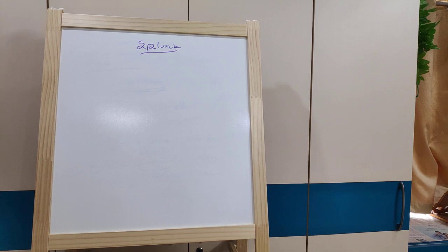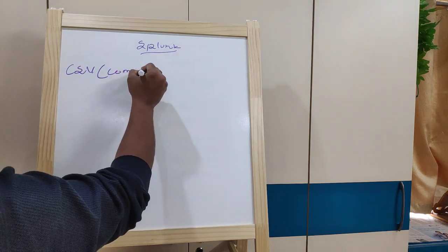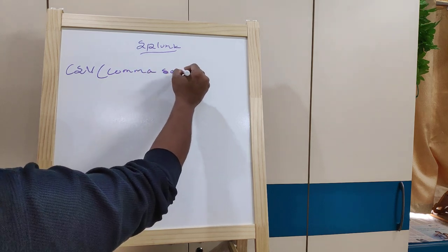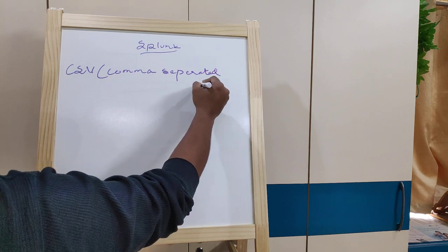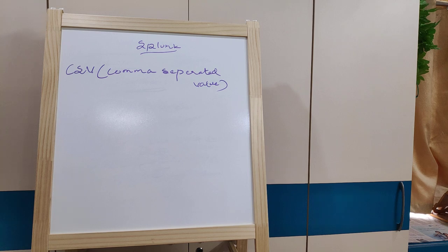Most raw data you will encounter is CSV log files. Each entry has some sort of format. It makes custom field extraction very easy with delimited files and CSV format — comma separated values — giving a distinct separation of fields in this data. We can use Splunk's field extraction capabilities.